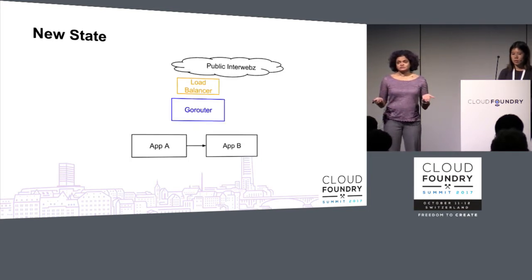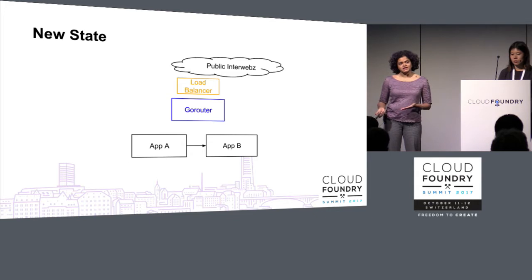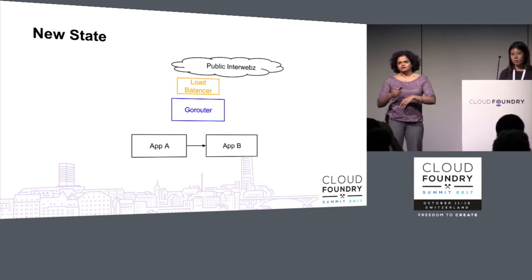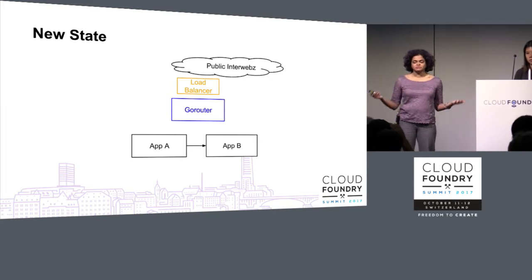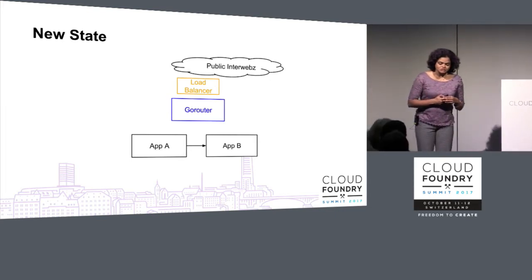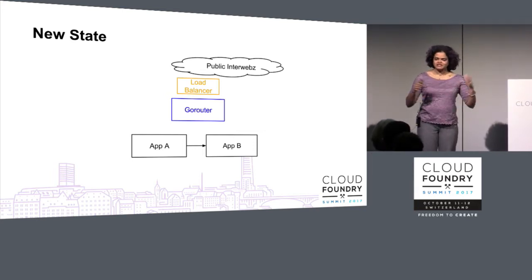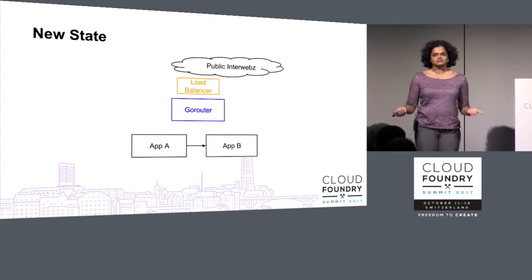Our idealized goal was to have direct connectivity between containers, where you didn't have to go out through the Go router and come back in, making the traffic path more effective, and also to have app-to-app policies — not IP-based policies tied to an entire org or space, but really letting apps talk directly to each other in a policy-driven way.